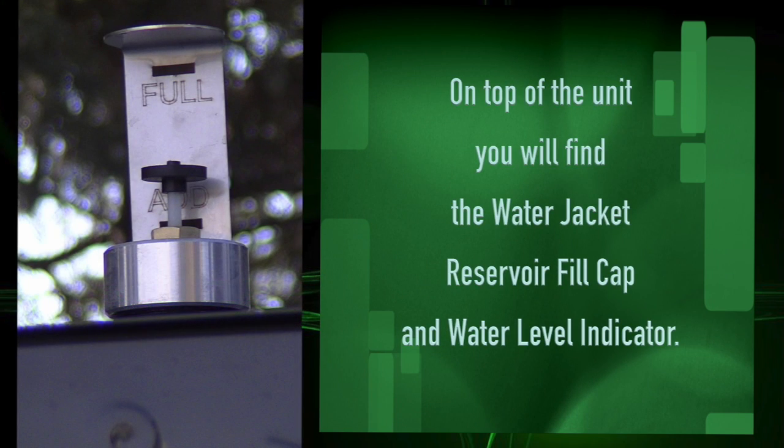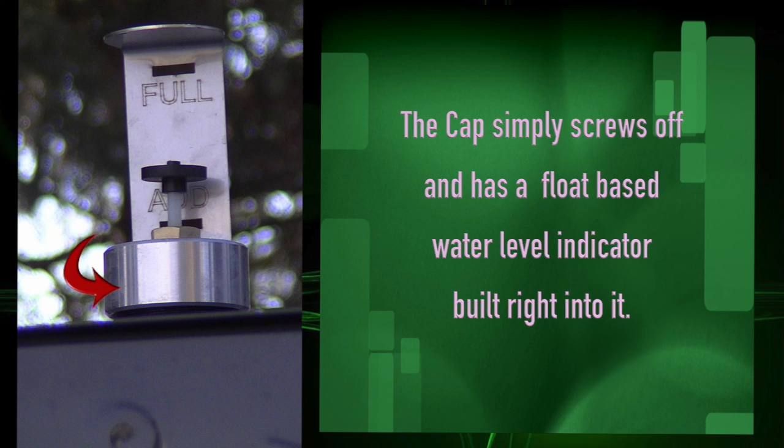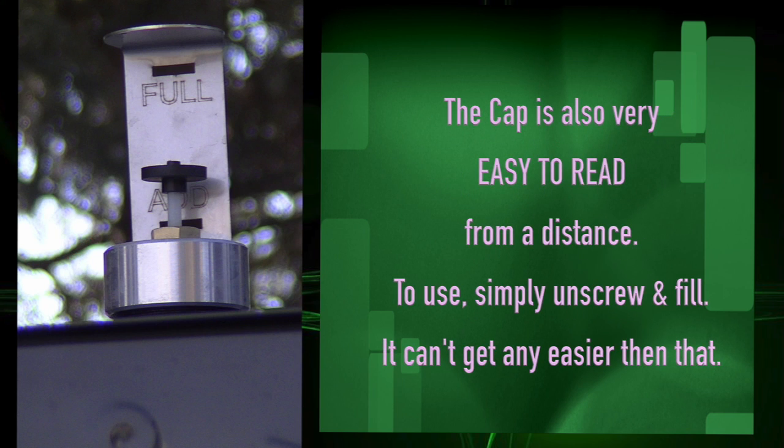On top of the unit you will find the water jacket reservoir fill cap and water level indicator. The cap simply screws off and has a float based water level indicator built into it. It is very easy to read from a distance. To use simply unscrew the cap and fill. It can't get any easier than that.